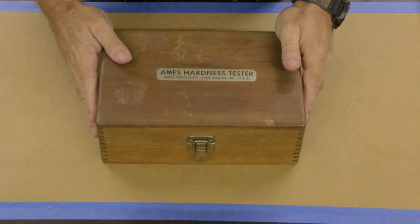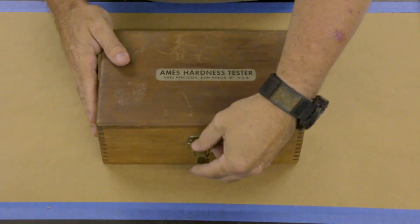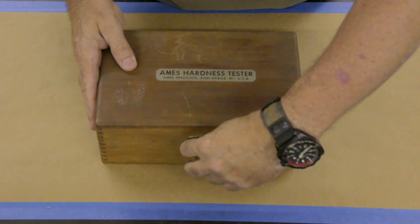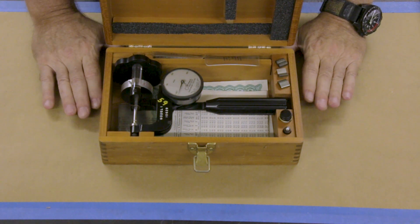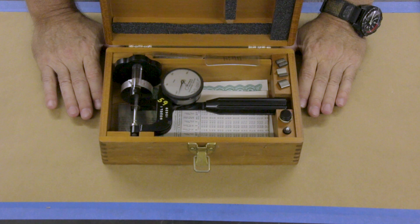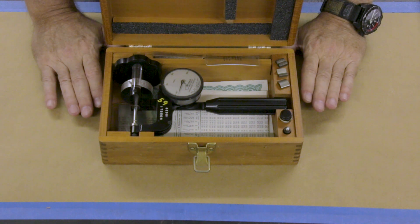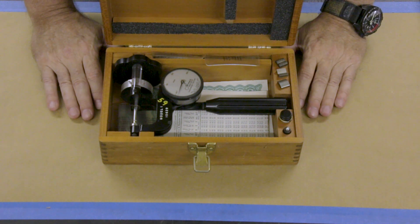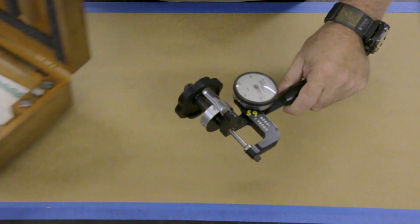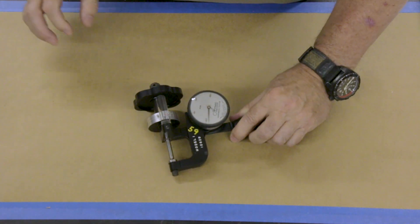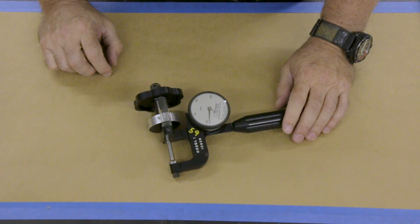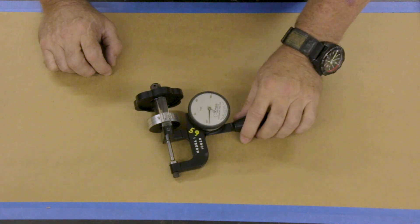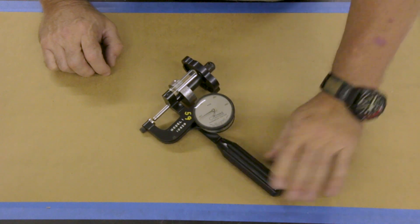Alright, so this is the Ames Model 1 Hardness Tester. What this is, is a portable professional tester designed for use on materials that cannot be brought to the bench for testing. Its level of accuracy is as good as a high quality bench tester and it's better than most import testers. Ames still manufactures these testers and they do offer repair and calibration services for them.